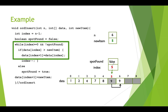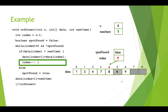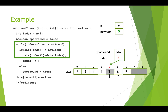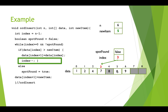We look at data at index 5, which is 9, and compare it to new item, which is 5. Nine is bigger than 5, so we copy what's in this index into the slot to the right: data at index plus one gets a copy of data at index. We've copied the value 9 one slot to the right. We decrement index to move one slot to the left. Now we check the condition again — index is still greater than zero, spotFound is still false — and we compare what's in slot 4, which is 8. Eight is still bigger than 5, so we copy 8 to the right and decrement index again.